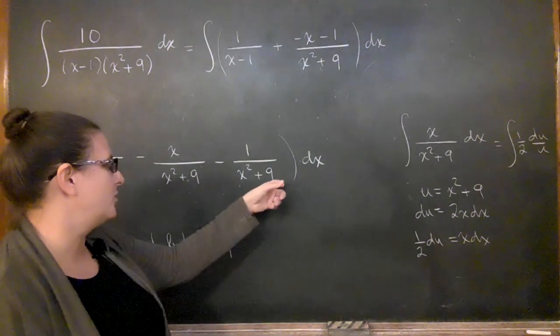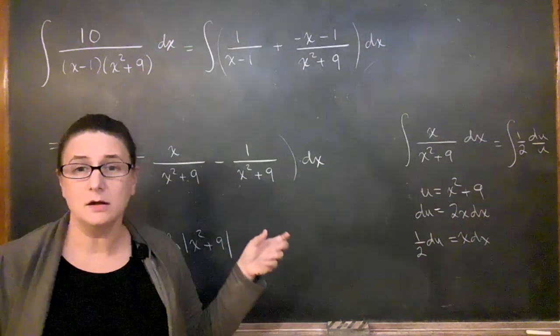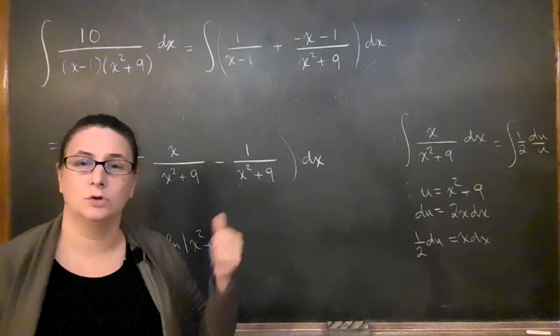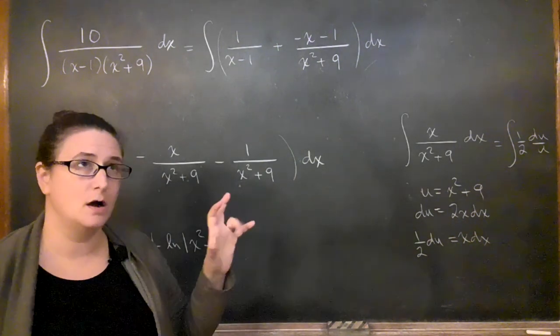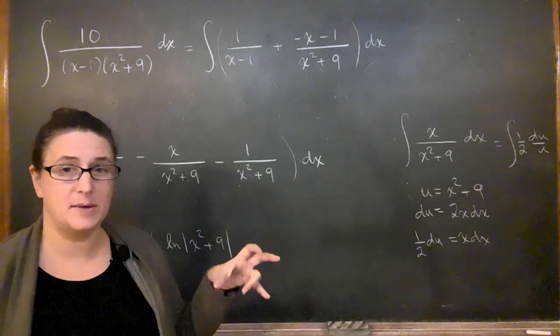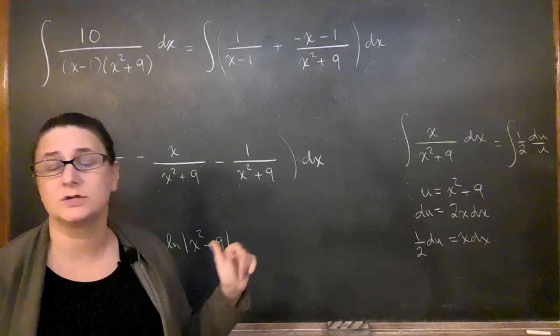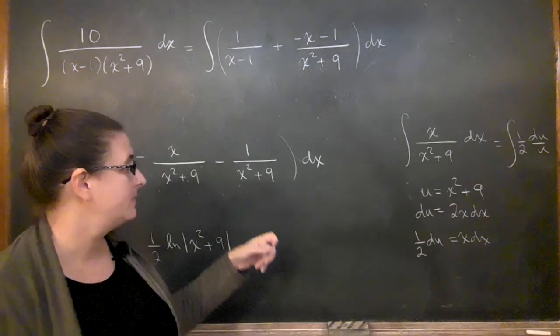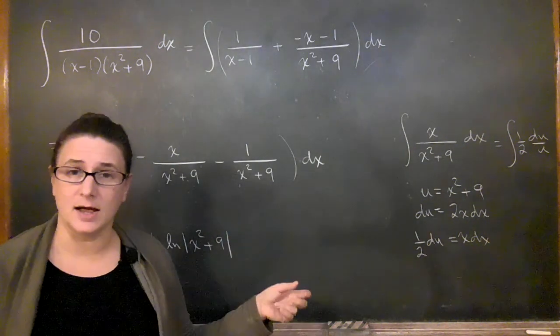You can do the thing where you pull out the 9 and blah, blah, blah, blah, blah, blah. Or you can just look on the sheet and use the form, right? There is on the sheet of basic integrals, there's 1 over x squared plus a squared because this comes up so often in this context.